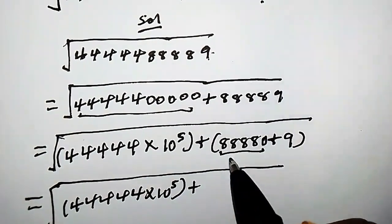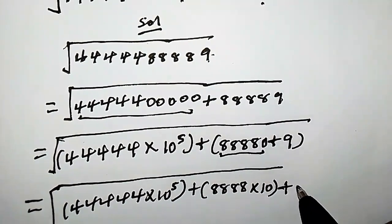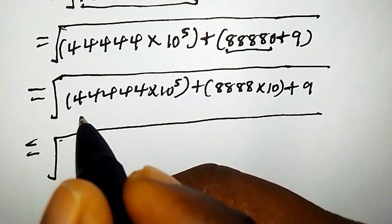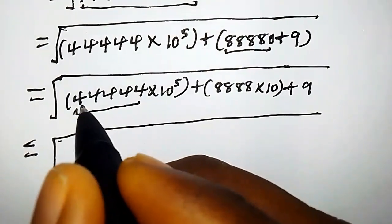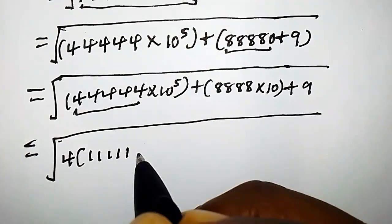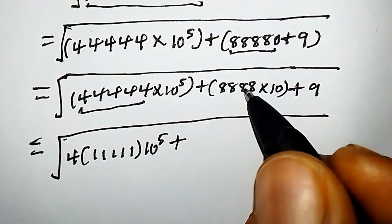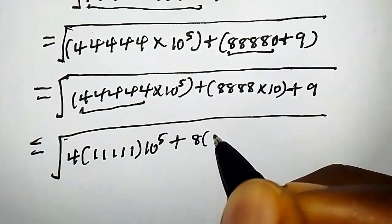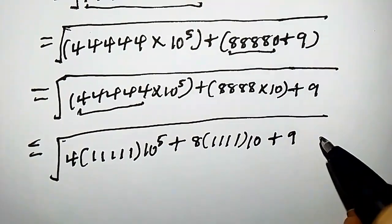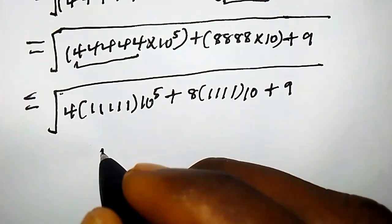Let's focus our attention on the second term: we can write it as 8888 times 10 plus 9. Proceeding further, if we pull out 4 from the first part, we have 4 times 11111 times 10 to the power of 5, and if we pull out 8 from the second part, we have 8 times 1111 times 10 plus 9.